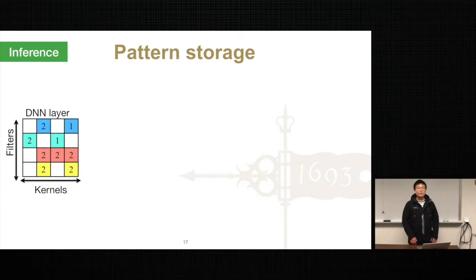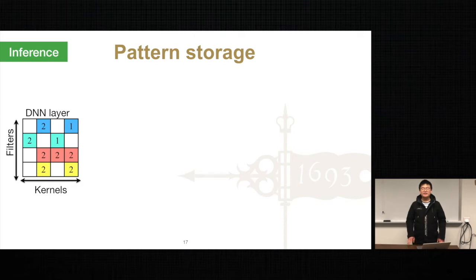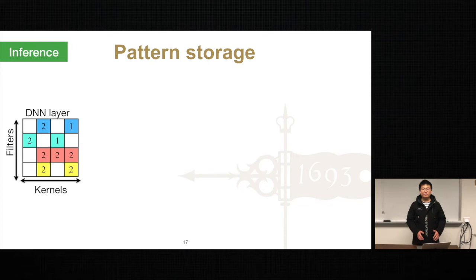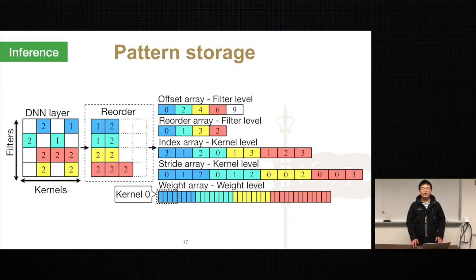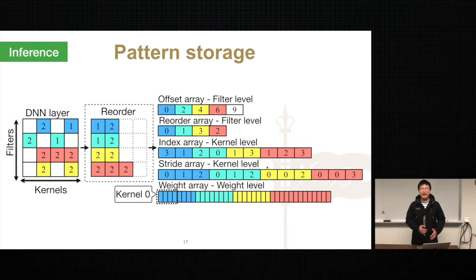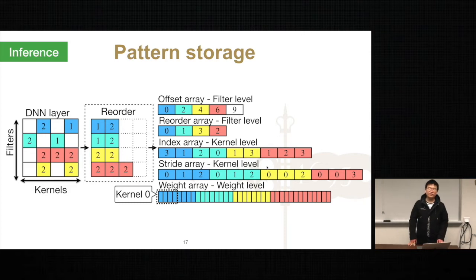Now it's pattern storage. We store DNN weights in a compact format called FKW. Compared with existing compact data formats like CSR, FKW is a higher-level format resulting in less overhead. We use four extra data structures to store the sparse information — two at the filter level and two at the kernel level. The key advantage of FKW is that it leverages pattern information to organize kernel storage and supports later branchless DNN execution, which other compact data formats cannot support. Please refer to our paper for more details.